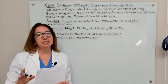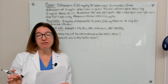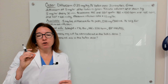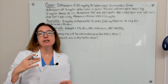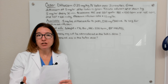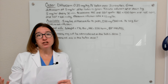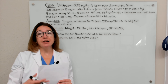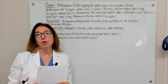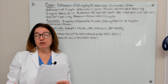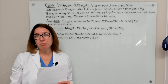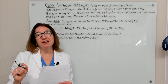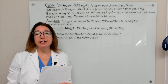Titrating medications in the critical care setting is very common. What I mean by titration of medications is we are going to increase or decrease the dose of the medication provided to the patient based on certain patient parameters. Common medications that are titrated include antiarrhythmics such as diltiazem or amiodarone. Vasopressors are also titrated such as epinephrine or dopamine. Heparin is titrated as well as insulin, and analgesics such as fentanyl can be titrated as well.